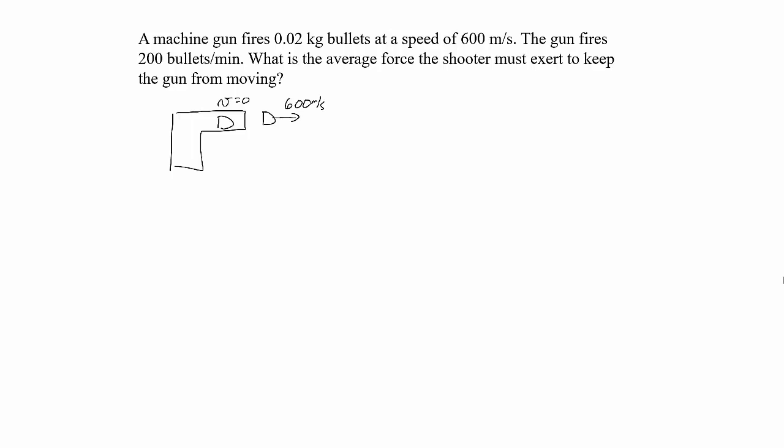So we have a machine gun, it's firing bullets that are 20 grams, 0.02 kilograms, and each bullet is leaving the muzzle at 600 meters per second.